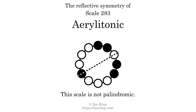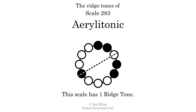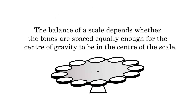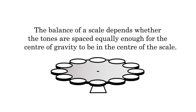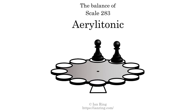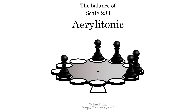This scale has reflective symmetry across an axis position two semitones from the root. This scale has a different pattern of intervals ascending and descending, so it is not palindromic. This scale has one ridge tone, here. The balance of a scale depends whether the tones are spaced equally enough for the center of gravity to be in the center of the scale. This scale is not balanced.